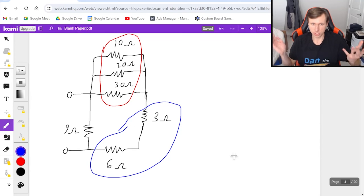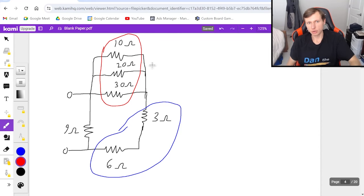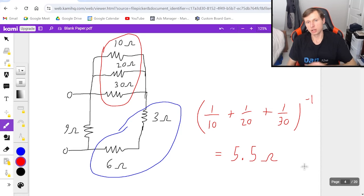Or you can do both, which is probably what I'm going to do right now. So to combine the red first, the ones in parallel, it's 1 over 10 plus 1 over 20 plus 1 over 30, and that's to the negative first power, and we'll get 5.5 ohms for that one.